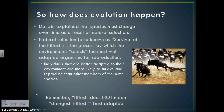Individuals better adapted to their environment are more likely to survive and reproduce than other members of the same species. Fitness — or 'survival of the fittest' — does not mean strongest. Sometimes fitness means being the tallest tree or having the deepest roots. Fittest just means the best adapted. The fitness of an organism refers to how well-adapted it is to its environment.